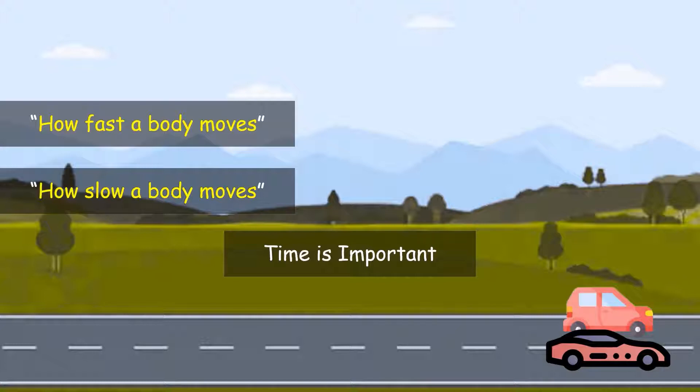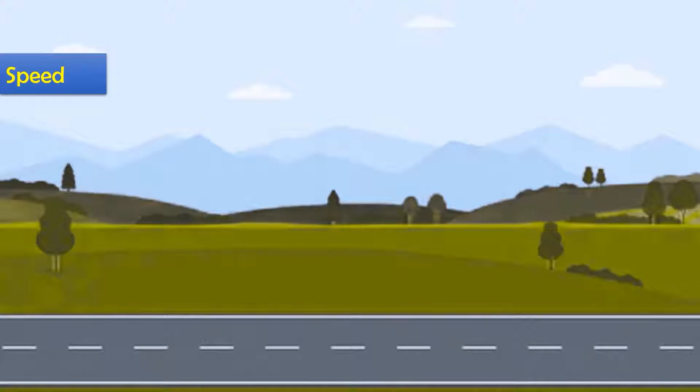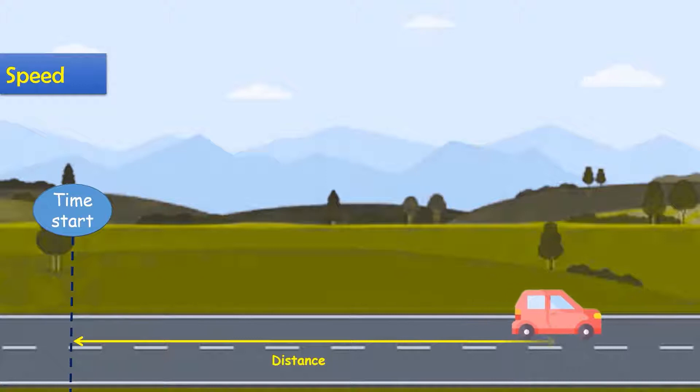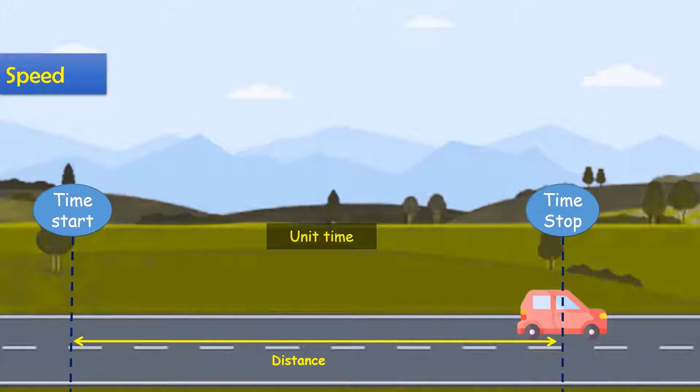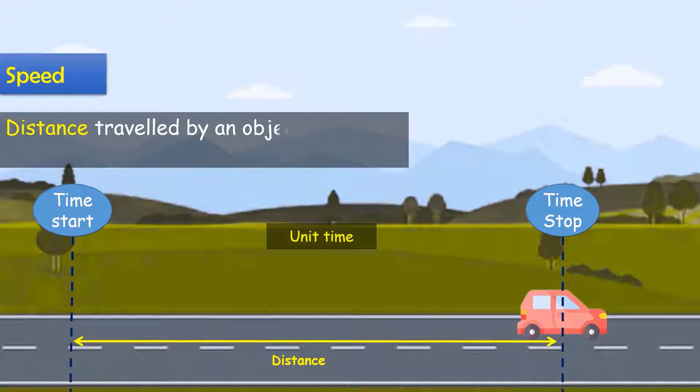Secondly, if time is fixed, the distance covered matters. A convenient way is to measure distance covered in unit time, like one minute or one second. This gives us the term speed. Speed is defined as the distance covered by the object in unit time.